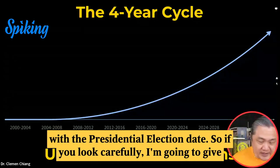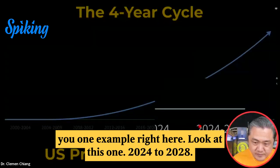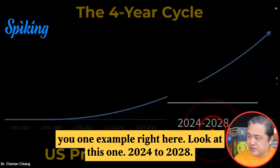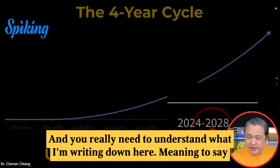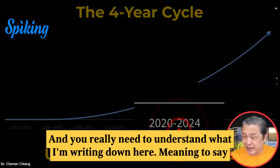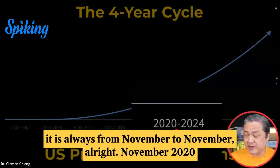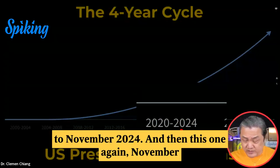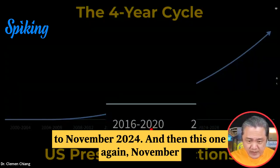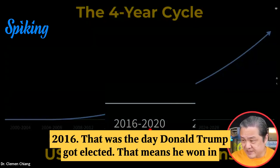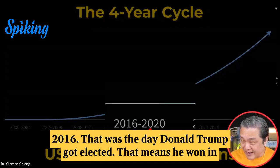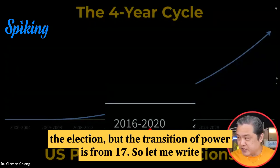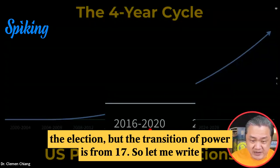So if you look carefully, I'm going to give you one example right here. Look at this one: 2024 to 2028. And you really need to understand what I'm writing down here, meaning it is always from November to November. November 2020 to November 2024. And then this one again, November 2016 — that was the day Donald Trump got elected.